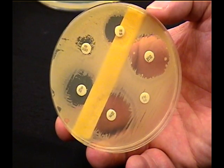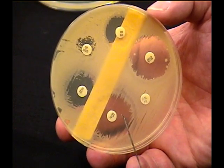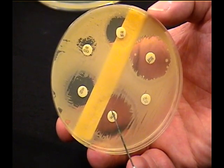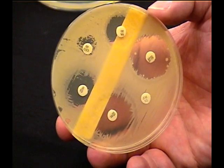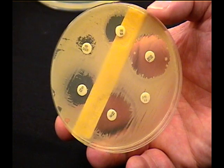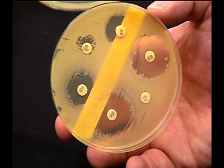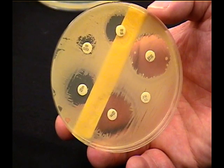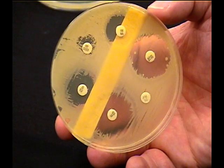But in order to determine whether the organism is resistant or sensitive, you simply measure the distance from the disc across the clear area and compare it with a table in your book that gives you what the standards are. You can determine antibiotic sensitivity or resistance to various antibiotics, same way they do it in a lab.